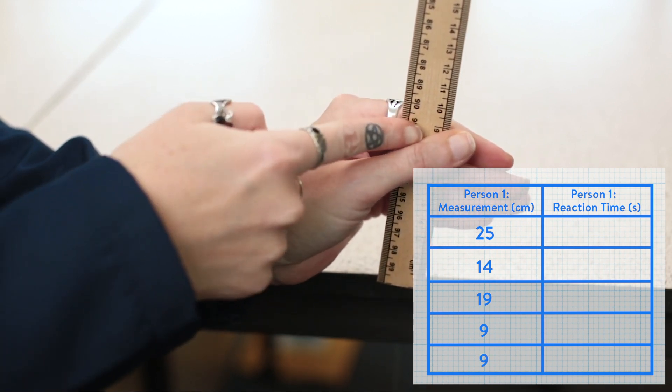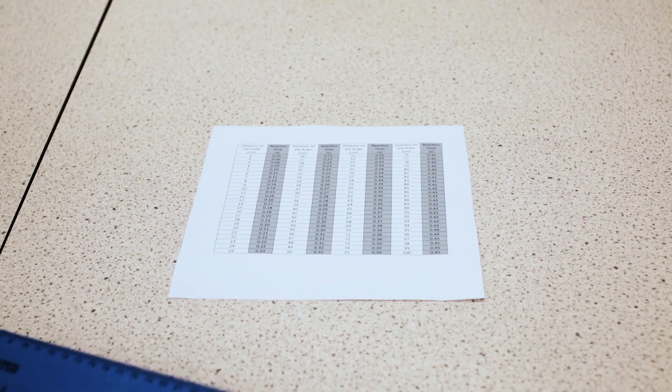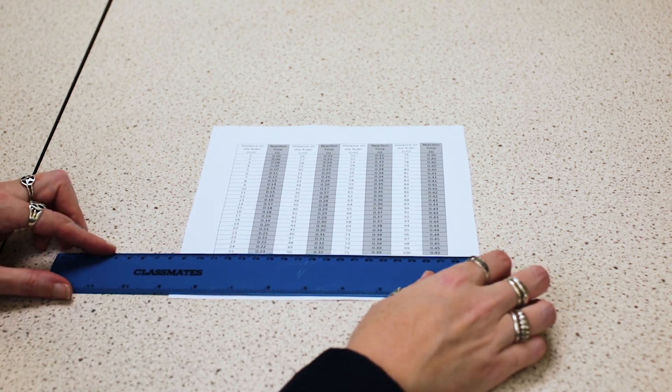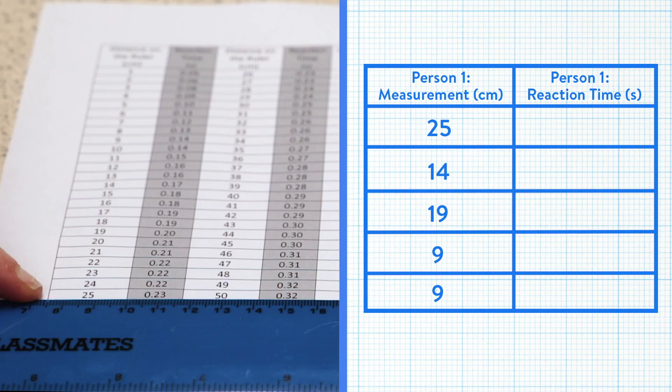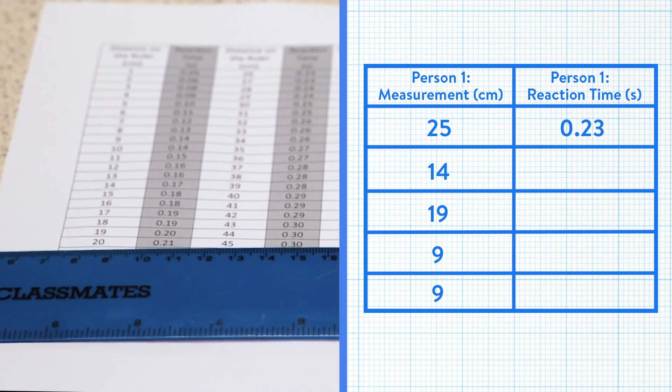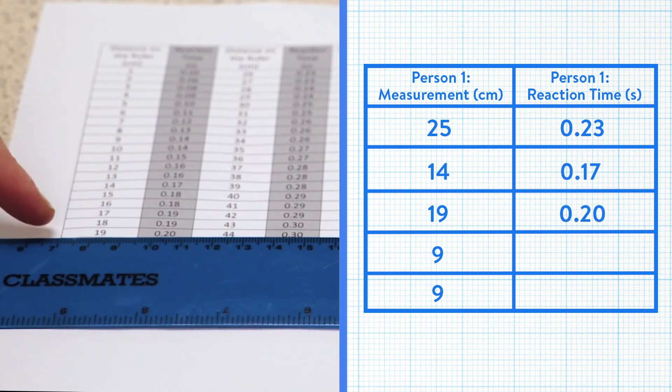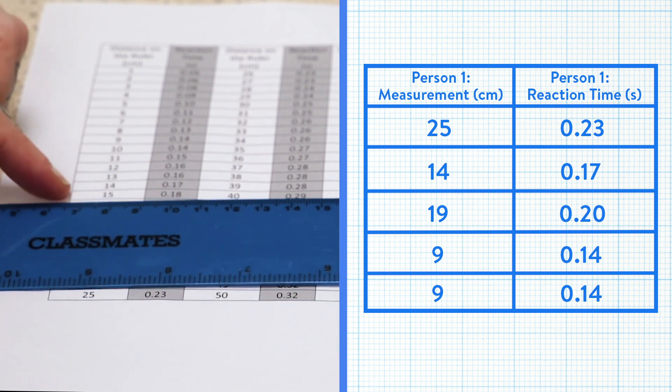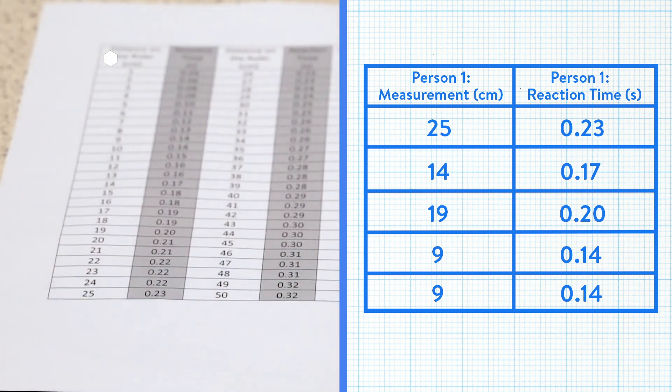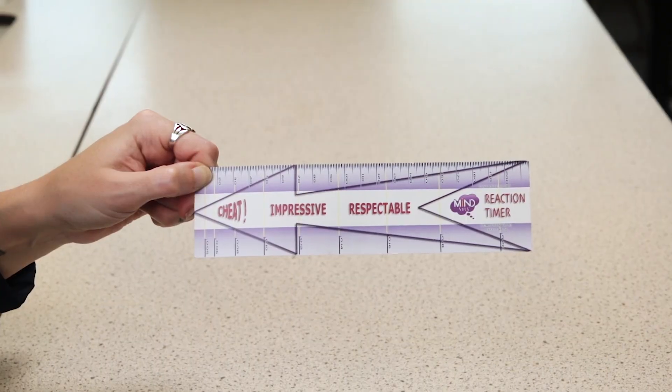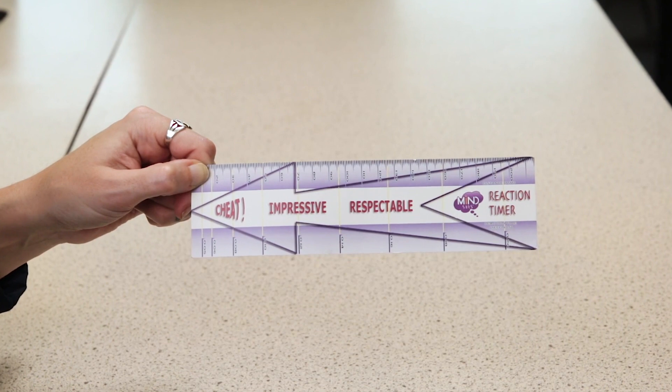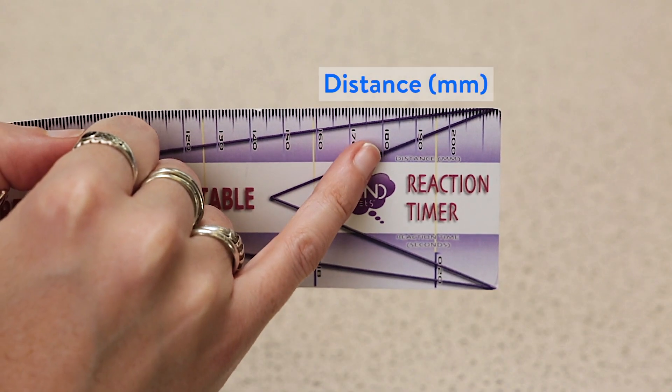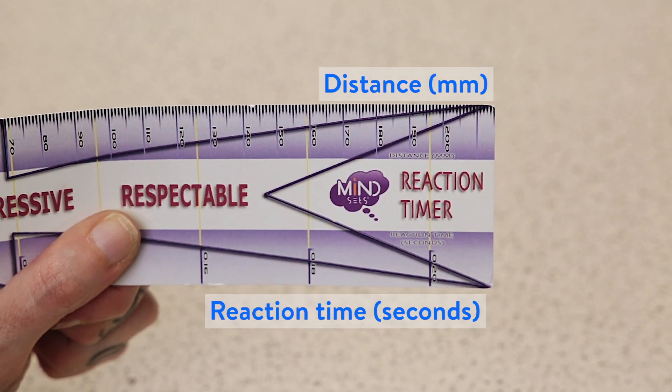Once several repeats have been completed, students can look up their results using the exam board's conversion table. The Reaction Timer ruler could also be used here in the same way. The distance and reaction time values can be read directly off the ruler scale.